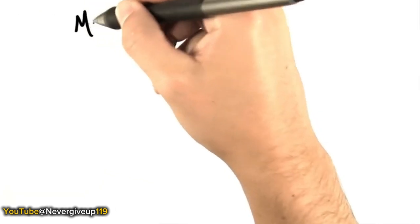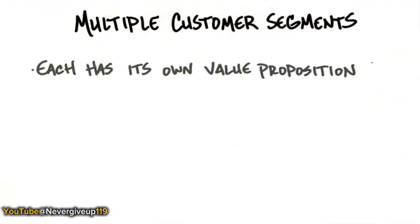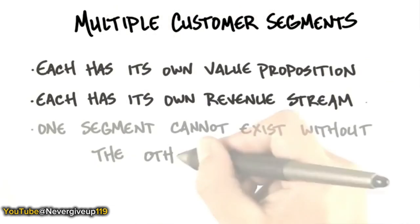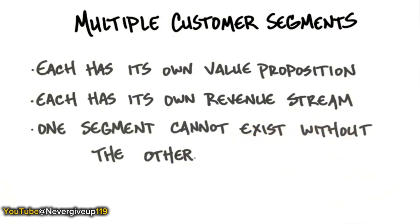To summarize Google Search: each segment had its own value proposition, but most importantly, each had its own revenue stream. And one segment cannot exist without the other — if you had users but no revenue, you'd be out of business over time. But if you had a revenue model but no users, there would be no reason for those advertisers to show up.